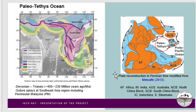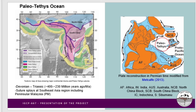Researchers also reconstructed the plate positions in the Permian time, which is about 300 to 250 million years ago. The Paleotethys was located here, surrounded by Africa, India, Australia, North China, South China, and Indochina. Sibumasu is over here, so Peninsular Malaysia is part of the Sibumasu block.